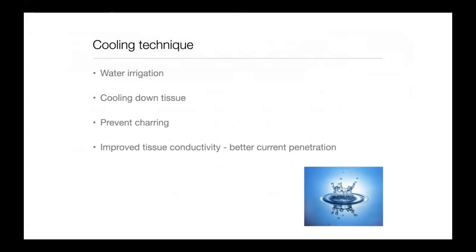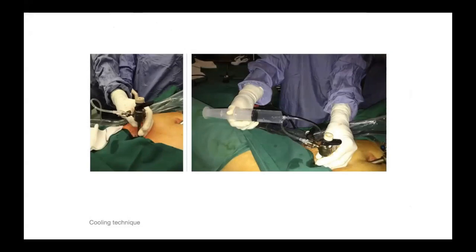You can also use a cooling technique with water or saline irrigation. This prevents charring by keeping the temperature below 200°C, preventing carbonization, and it improves tissue conductivity. Lowering tissue temperature achieves better white desiccation. In laparoscopy, you can apply this cooling technique by attaching saline or water to the port.